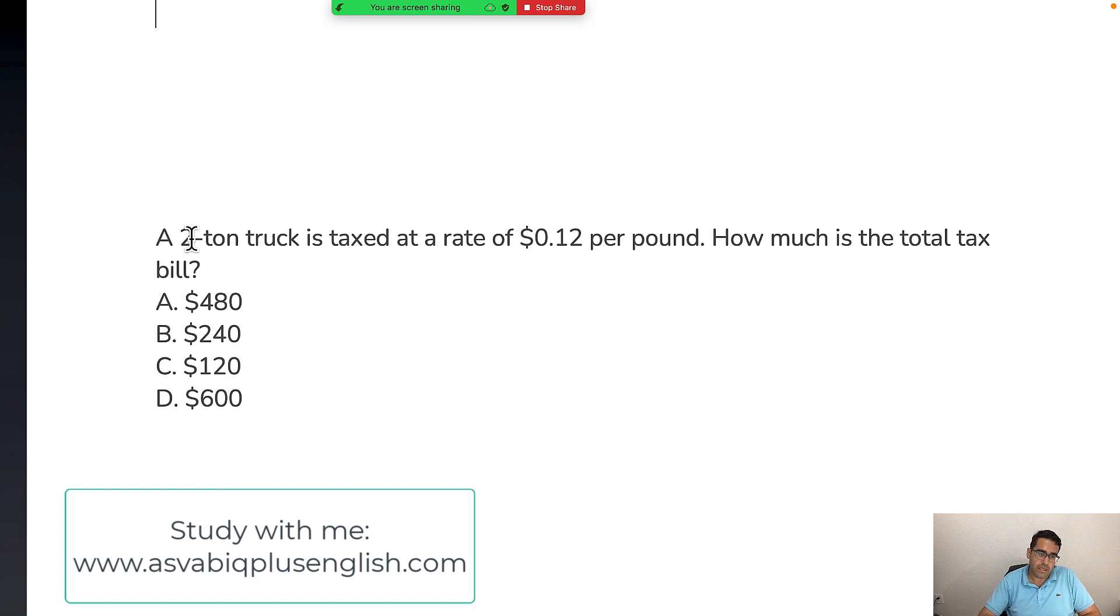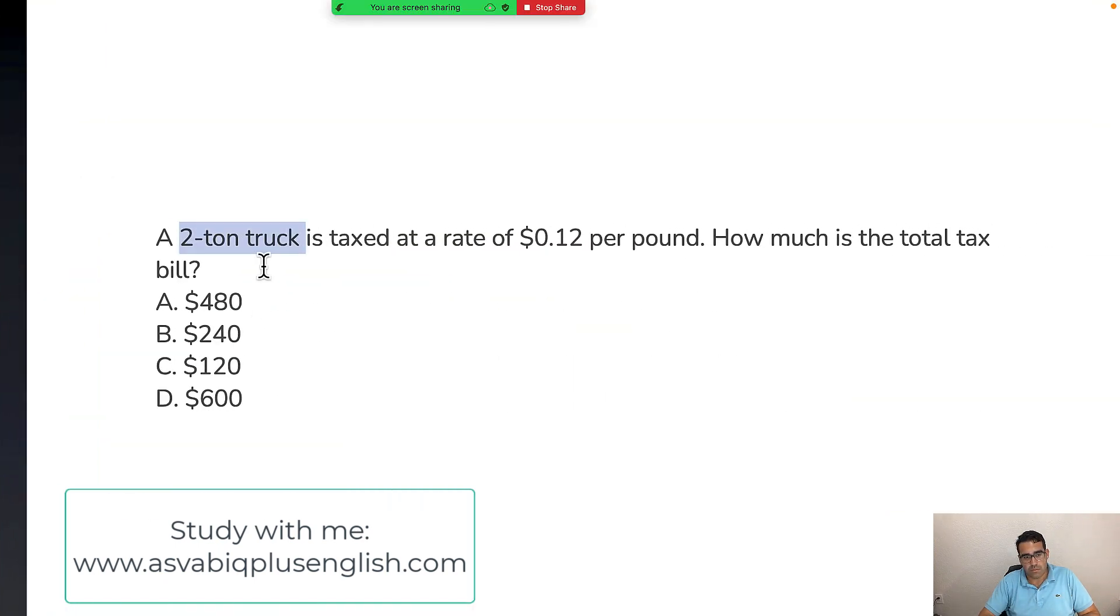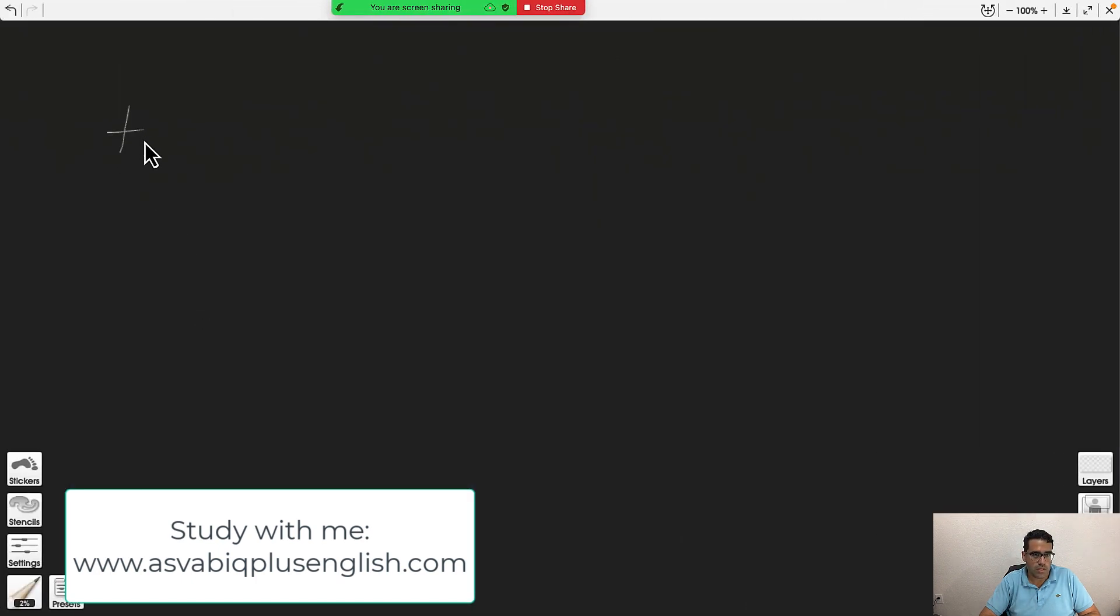It's telling us that a two-ton truck is taxed at a rate of 12 cents per pound. So here it's saying that the truck weighs two tons.